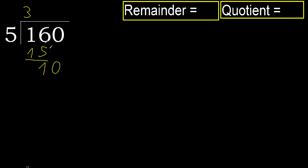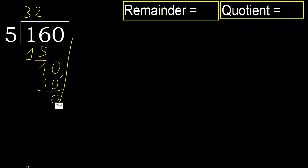10. 5 multiplied by 2 is 10, is not greater, ok. Subtract 0. Next — there is no number, therefore finish it.